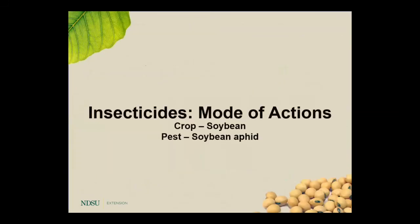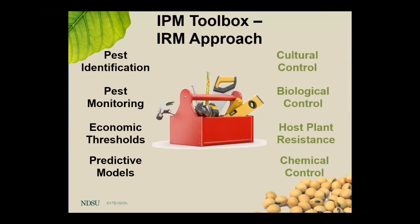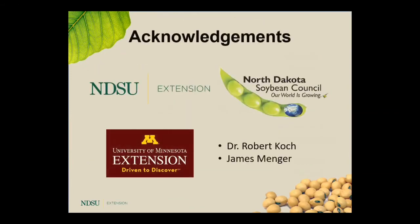250 aphids per plant is the economic threshold; 670 is the economic injury level, really up to the R6 stage. Once you get to R7 and R8, we've reached full maturity, so any aphid feeding during that time really won't impact yield as seed is already developed. For alternative modes of action away from pyrethroids like bifenthrin: carbamates such as Lannate, neonicotinoids like imidacloprid, Wrangler, Nuprid, and some organophosphates. Also consider biological control — ladybugs and lacewings are very important — and soybean varieties with host plant resistance such as the Rag genes, which have become more popular in the last decade.